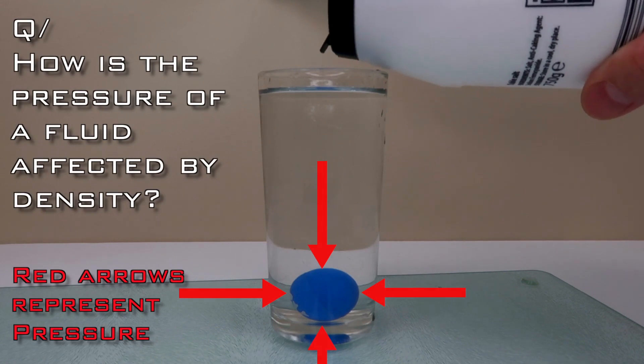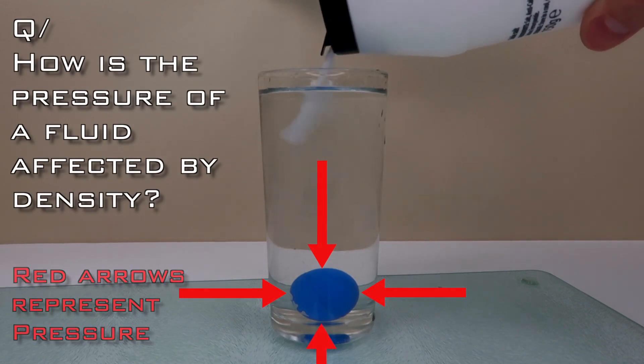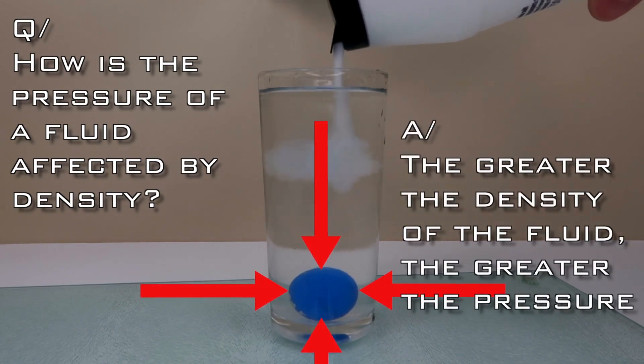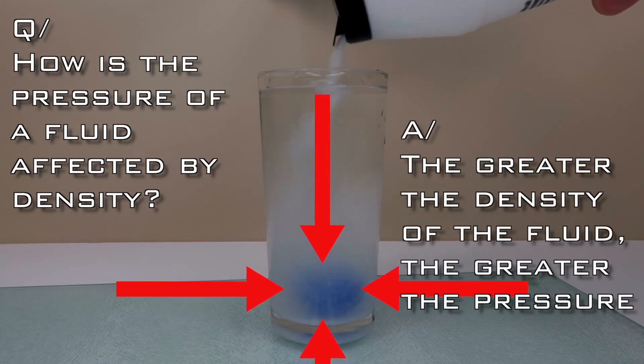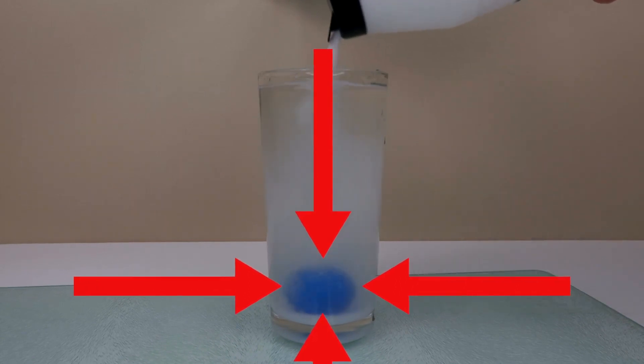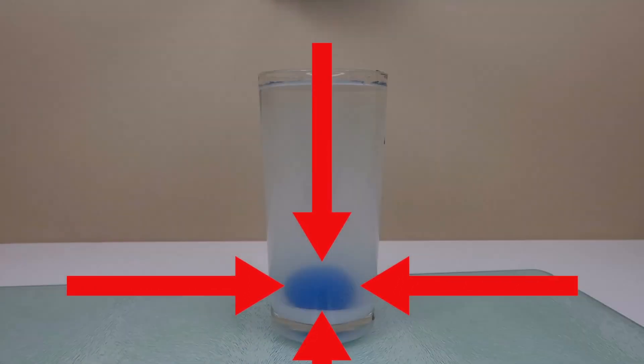How is the pressure of a fluid affected by density? The greater the density of the fluid, the greater the pressure. If I add some salt to the water, this makes the liquid more dense and the pressure becomes more.